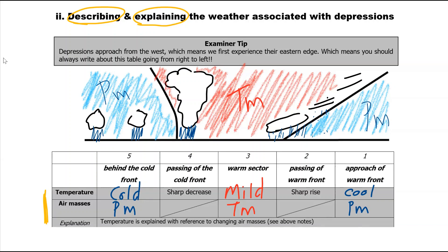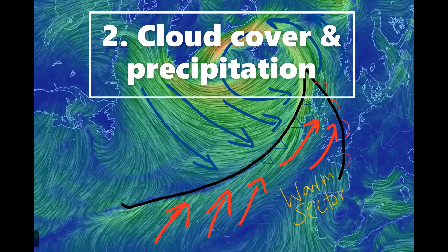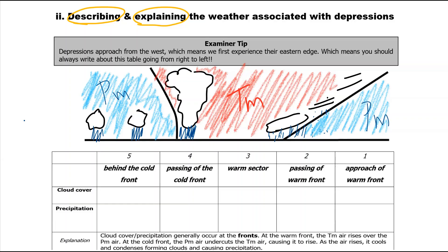If you need to explain more about why that is the case, you can refer to your notes on changing air masses. For example, the TM air mass comes from the tropics — a warm region — and brings mild or warmer air further north. The PM air mass originates in the poles — a cold region — and brings that colder air further south.